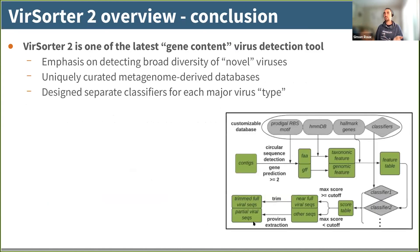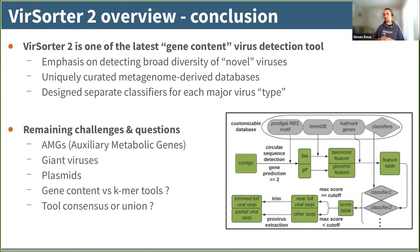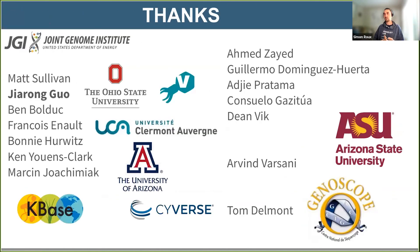In conclusion, VSorder2 is one of the latest gene content-based virus detection tools, with a big emphasis on detecting broad diversity of novel viruses. We have a uniquely large database of metagenome-derived profiles, and a unique approach of splitting global viral diversity into different groups to better detect each one. Remaining challenges include AMGs — host-derived genes in viral genomes — giant viruses, and plasmids. I'm also happy to discuss gene content versus k-mer tools, and how to aggregate results from multiple tools. Thank you to everyone involved from VSorder1 through this new iteration of VSorder2.